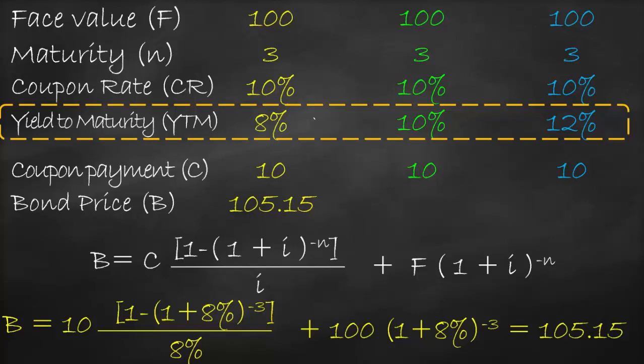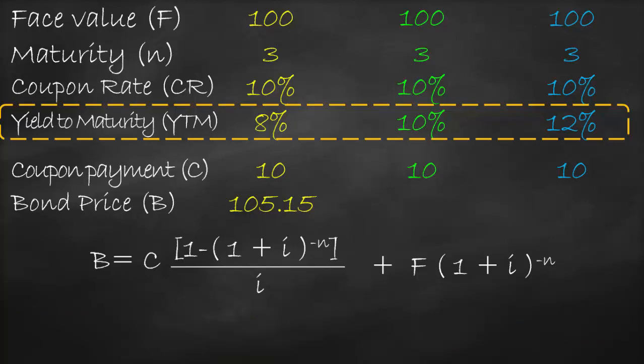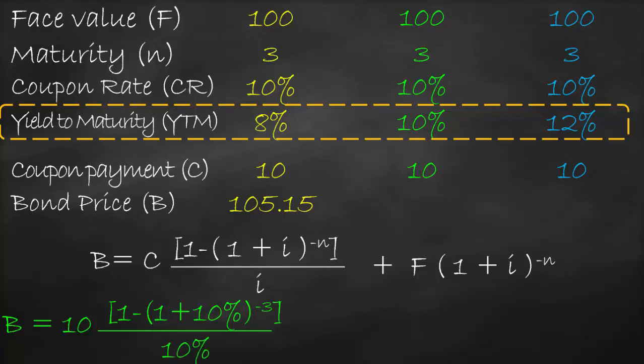For the second scenario, the yield to maturity is 10%. Bond price = 10 × [1 − (1 + 10%)^(−3)] / 10% + 100 × (1 + 10%)^(−3). This gives us a bond price of 100.